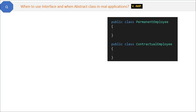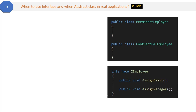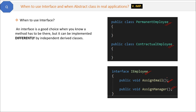When to use an interface: suppose in your project you have two classes, PermanentEmployee and ContractualEmployee. You know both kinds of employee will have some email ID and some manager. So you create one interface IEmployee and declare methods 'AssignEmail' and 'AssignManager'. You then inherit this IEmployee interface in both classes. Interfaces are the right choice here because every employee must have an email ID and manager, but the implementation can differ. An interface is good when a method must exist in the class but can be implemented differently by independent derived classes — it acts like a contract.